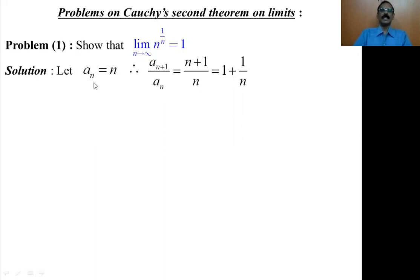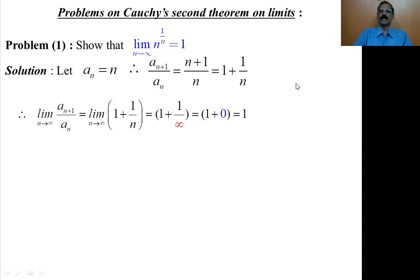Therefore, a_n is n. What is a_(n+1)? It is n+1. So a_(n+1) by a_n equals (n+1)/n, which equals 1 plus 1/n. Taking the limit on both sides, the limit of a_(n+1) by a_n as n tends to infinity equals the limit of 1 plus 1/n as n tends to infinity.